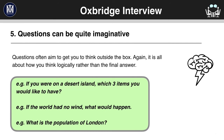Five: questions can be quite imaginative. The questions are designed to get you to think outside the box, and they can really put you into very uncomfortable and unsettling situations. Here are some example questions: 'If you were on a desert island, which three items would you like to have?' Or, 'If the world had no wind, what would happen?' Or, 'What is the population of London?' For all of these, they might seem quite scary at first, but break them down and go through them logically.